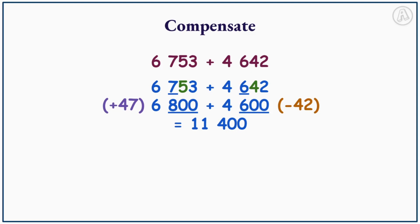This means we need to make adjustments to our estimated answer. So our estimated answer is 11,400. Since we added 47, we now need to subtract 47, and since we subtracted 42, we now need to add 42 back. So 11,400 minus 47 equals 11,353 plus 42 equals 11,395.